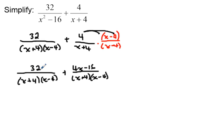So what I can do now is I can combine the numerators here. I've got 32 plus 4x minus 16 over x minus 4 and x plus 4.